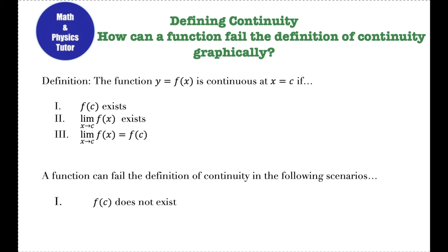Hey guys, today we're going to be talking about the definition of continuity and how a graph can fail that definition in three different ways. So first off, when defining continuity, if I have the function y equals f of x, that function is continuous at x equals c if three conditions are met.